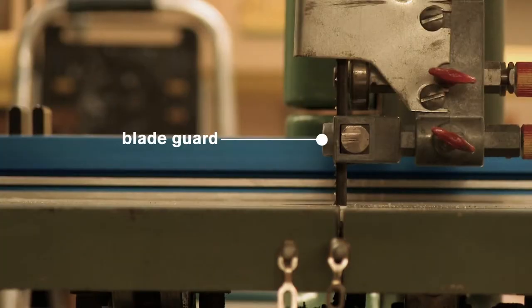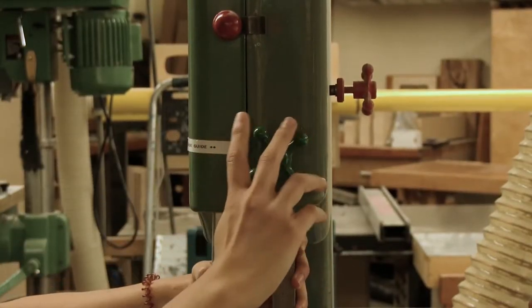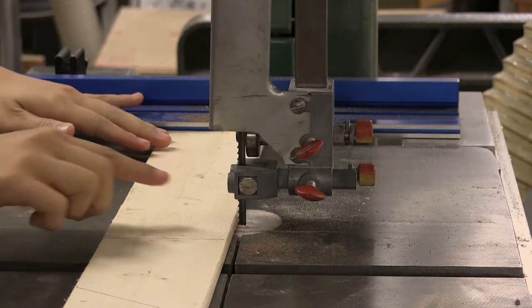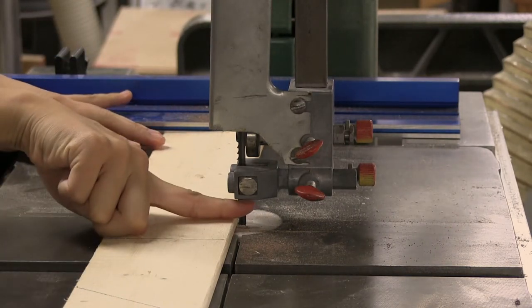Check and adjust the blade guard before making your cut. This controls the height of the exposed blade. The gap between the top of the material and the bottom of the blade guard should be less than two centimeters or about the width of one finger.